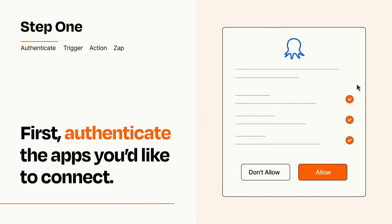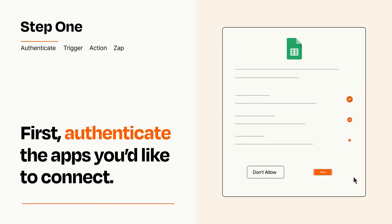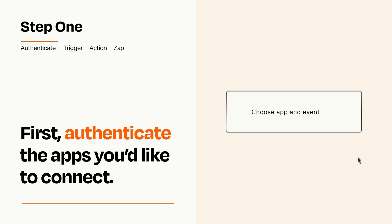To get started, you'll just need to authenticate your apps, which takes just a few seconds. Zapier meets industry standards for encryption when connecting with each of your apps.